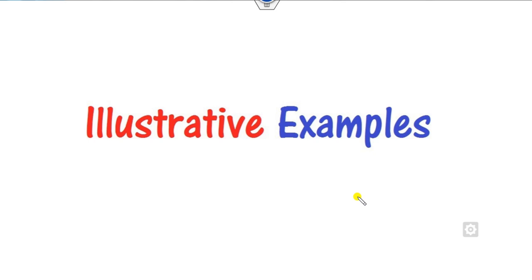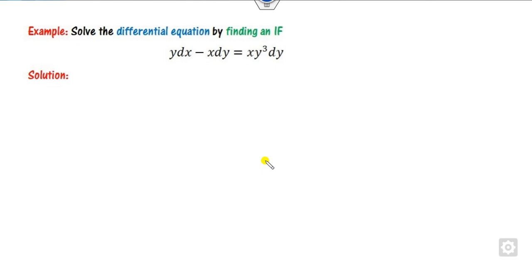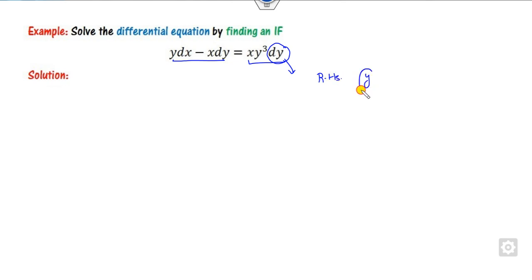Now let's see some examples — about 7 to 8 examples so that you can easily understand. Very simple rule: you have to see that there is a part y dx and m dy here. On the right-hand side there is a term of dy, which means on the right-hand side you need only terms consisting of y. So I don't need x; what you can do is divide both sides by x.